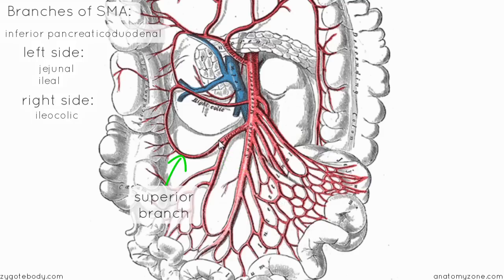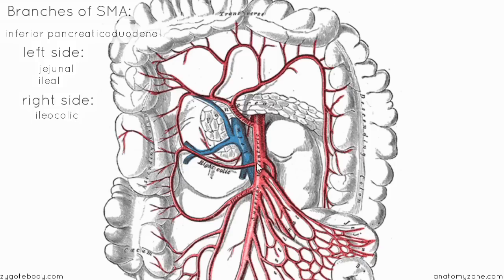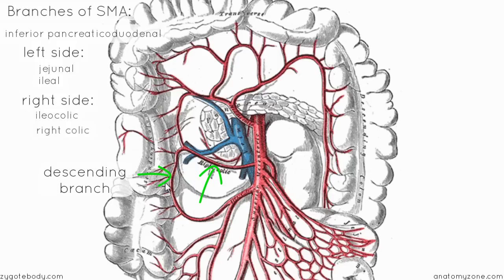Moving on to the right colic artery, which is the next branch coming off the superior mesenteric artery above the ileocolic artery. The name describes what this artery does — colic refers to colon, and right means the right side, which is the ascending colon. The right colic artery vascularizes the ascending colon and has two branches: a descending branch, which anastomoses with the superior branch of the ileocolic artery, and an ascending branch, which anastomoses with the middle colic artery above it.